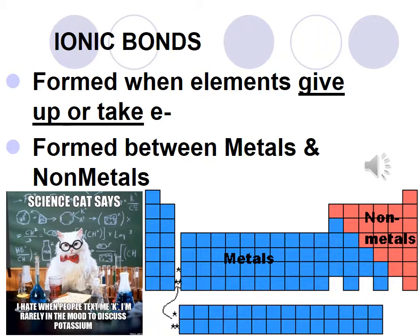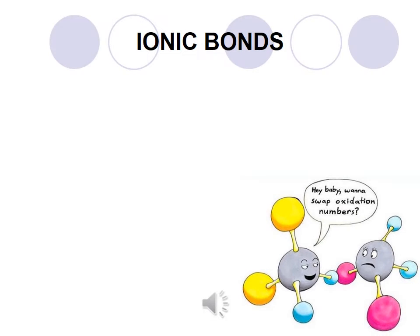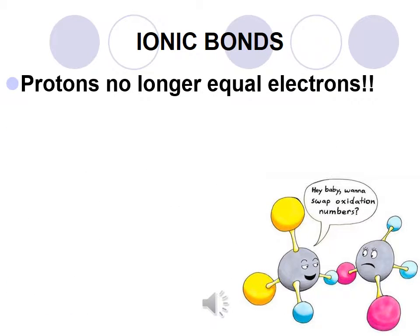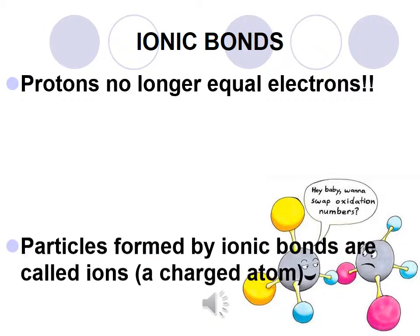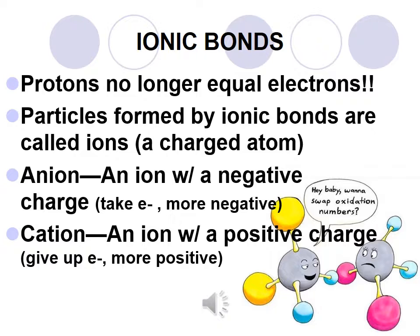Ionic bonds are formed when elements give up or take electrons. They are formed between metals and non-metals. The protons no longer equal the electrons. Particles formed by ionic bonds are called ions — a charged atom. An anion has a negative charge; they take electrons, so taking is a negative thing. A cation has a positive charge; it gives up electrons, so giving is a positive thing.